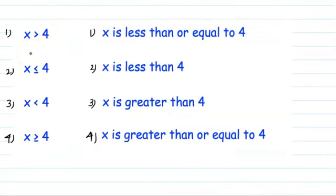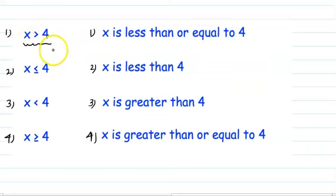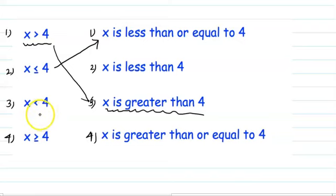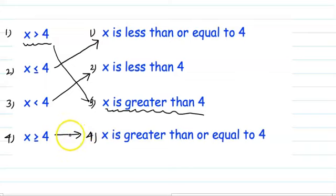Here are a couple of matching questions. First: x greater than 4 — you can see it matches here on the number line. Second: x less than and equal to 4 — it goes there. Third: x less than 4 — it matches here. Last one: x greater than and equal to 4. So you should know how to read these inequality symbols and match them correctly.